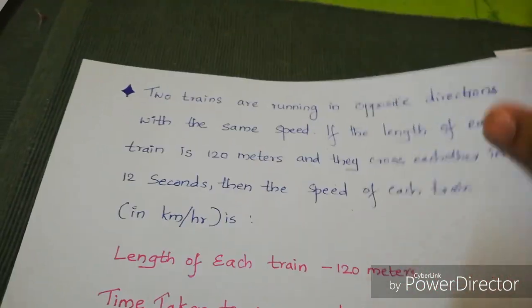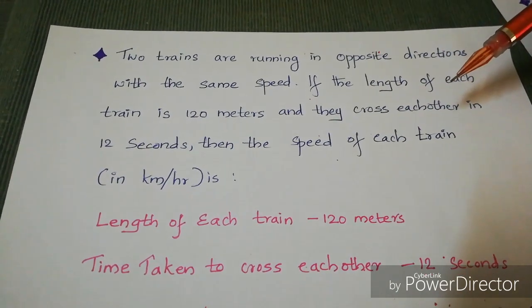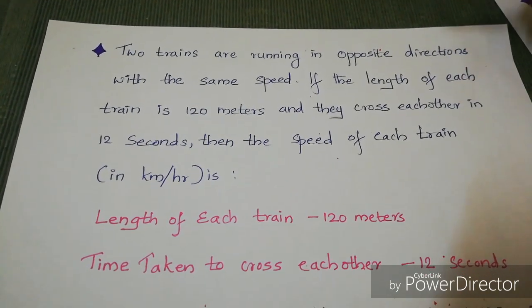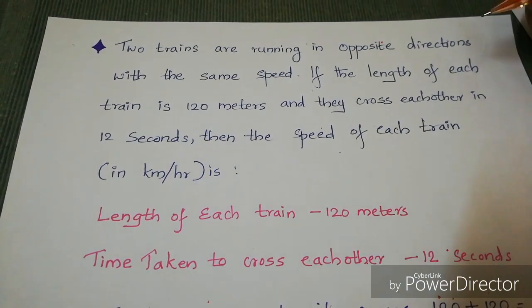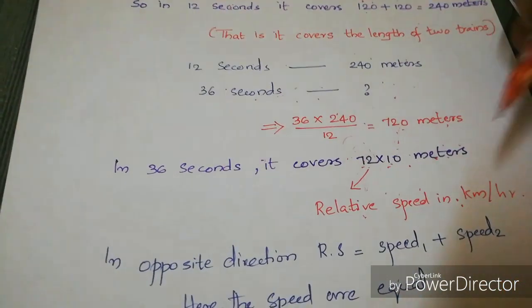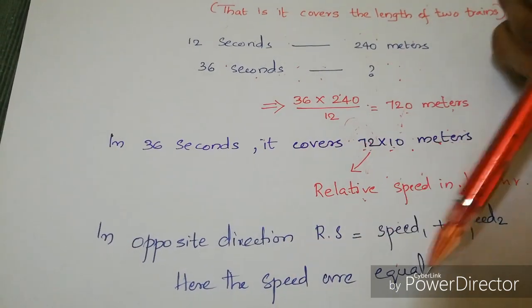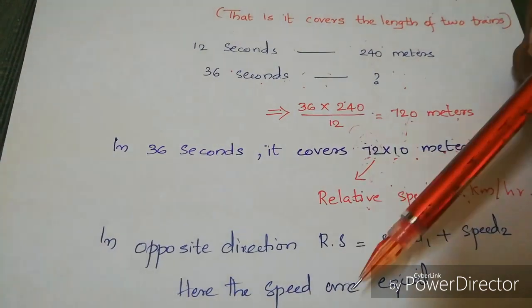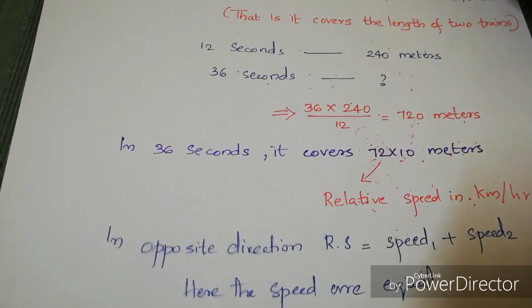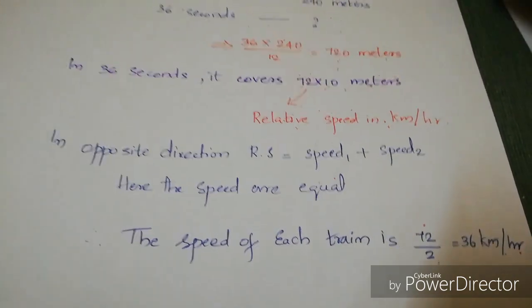Since the two trains are running in opposite directions, the relative speed equals the sum of their individual speeds: Speed 1 + Speed 2 = 72 km/h. Both speeds are equal, so each train's speed = 72 ÷ 2 = 36 kilometers per hour.